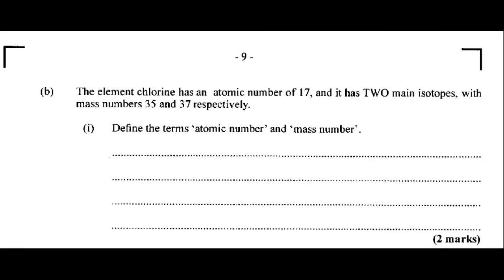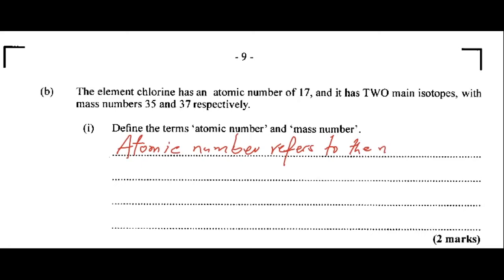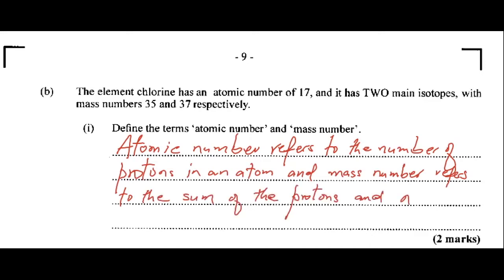Part B of number 2: the element chlorine has an atomic number of 17 and it has two main isotopes with mass numbers 35 and 37 respectively. Define the terms atomic number and mass number. Atomic number refers to the number of protons in an atom, and mass number refers to the sum of the protons and neutrons in an atom.